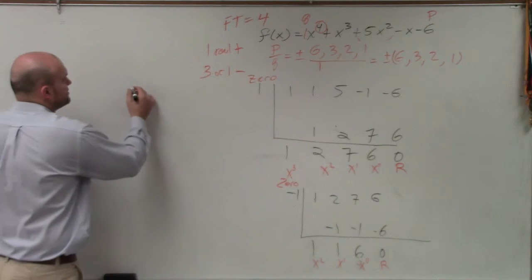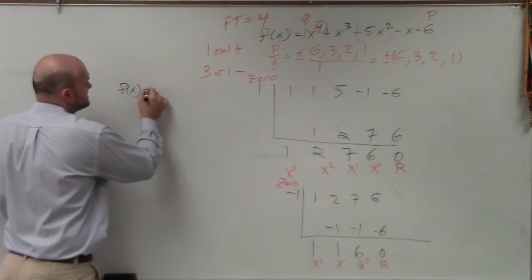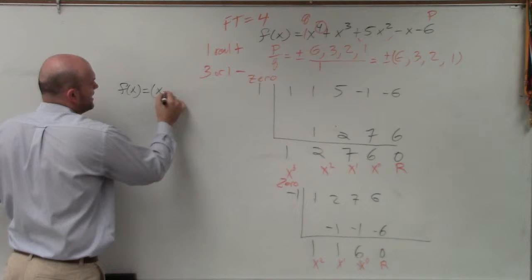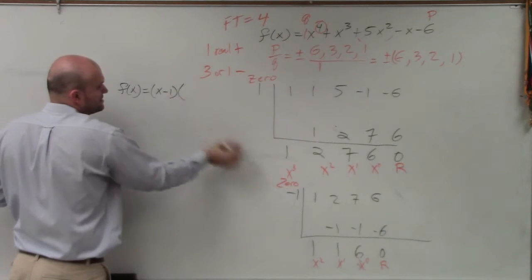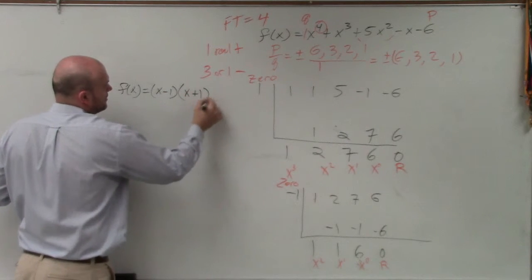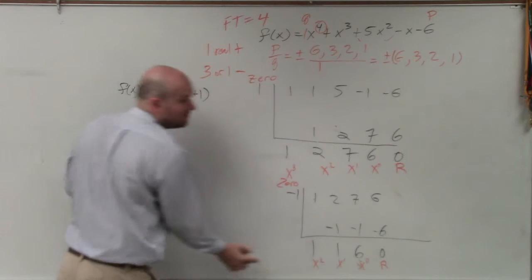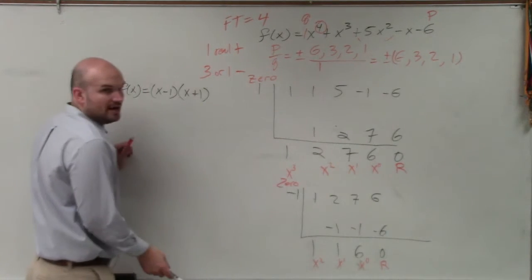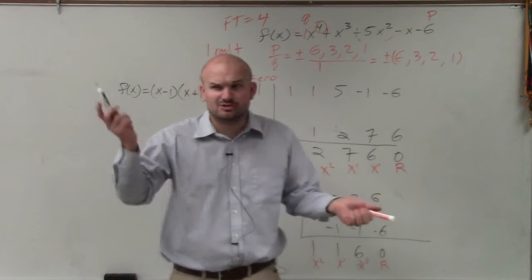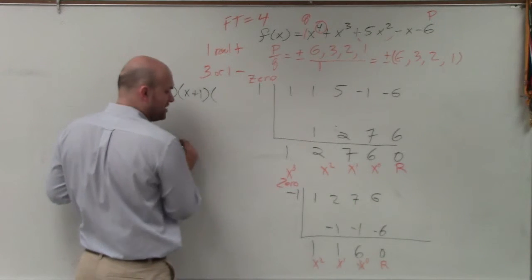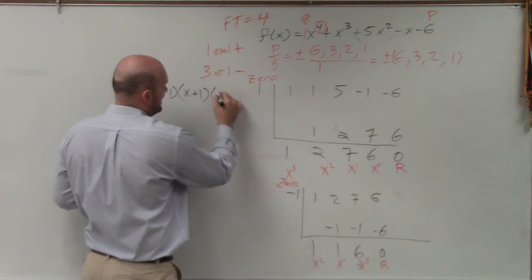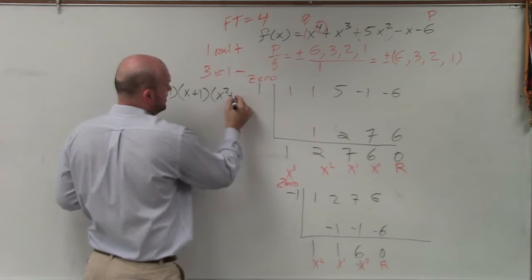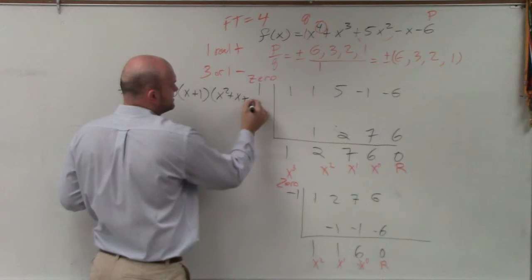I got more room. OK. So, so far, f of x equals this 0, x minus, or this factor, times that factor, times this written out. These are the coefficients. Right? 6 times x to the 0 is just going to be 6, FYI. So I have x squared plus x plus 6.